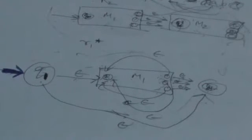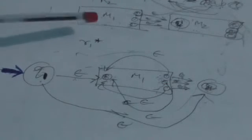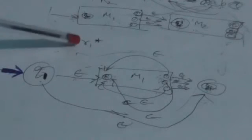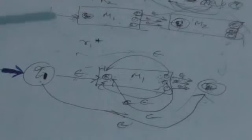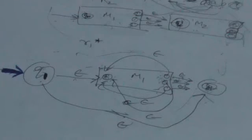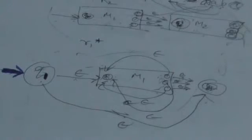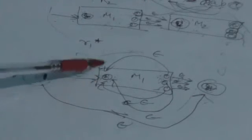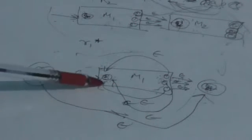Hello friends, welcome back. Now suppose R1 is a regular expression, then R1 Kleene star will also be a regular expression. Suppose M1 is a finite automaton corresponding to the regular expression R1. Now we have to design a finite automaton corresponding to the regular expression R1 Kleene star. First of all, make an initial state Q1 and from here add an empty transition to the initial state of M1.